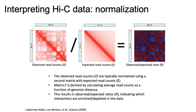Looking at the raw counts out of a Hi-C experiment is typically not that common, because a lot of the interactions you see in the raw count matrix O are expected. Adjacent positions on the genome are expected to interact very frequently simply because they're close on the linear chromosome, and so obviously they're going to be found in close proximity in 3D space frequently.